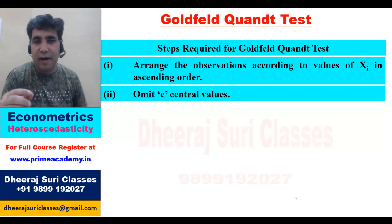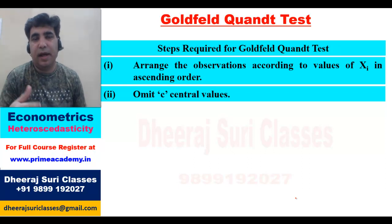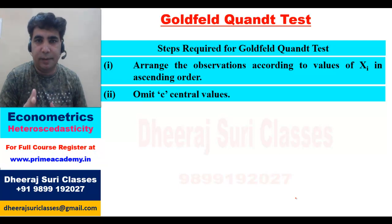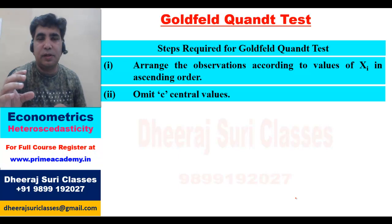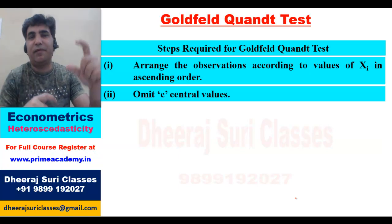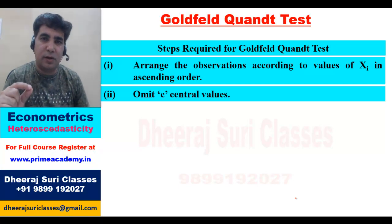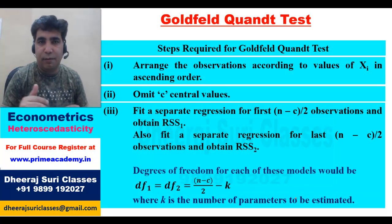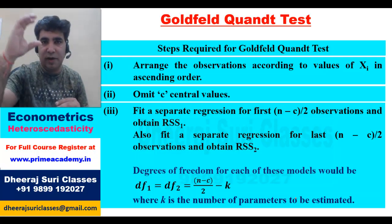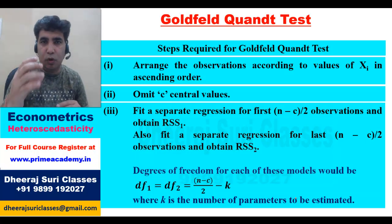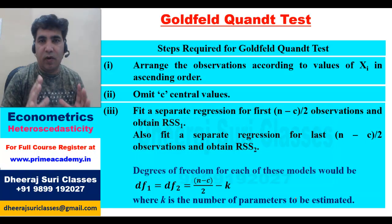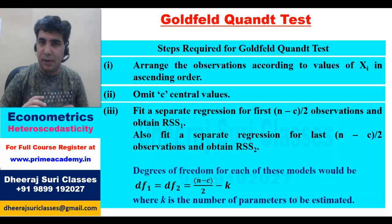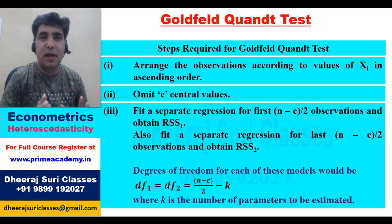Once we have arranged the data, we omit C central values. C is some number given by the question. For example, if you have 50 values and C=8, then 8 central values are eliminated, leaving 21 values on top and 21 on the bottom. After removing C values, we have two datasets. We fit two regression models — one for the upper dataset and one for the lower dataset — and find their respective RSS values: RSS1 and RSS2.